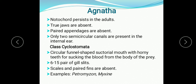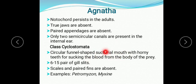Only one class is there in group Agnatha: class Cyclostomata. They have a circular, funnel-shaped suctorial mouth with horny teeth for sucking blood from the body of prey. Six to fifteen pairs of gill slits are present and scales and paired fins are absent. Examples are Petromyzon, known as the lamprey, and Myxine, commonly known as the hagfish.